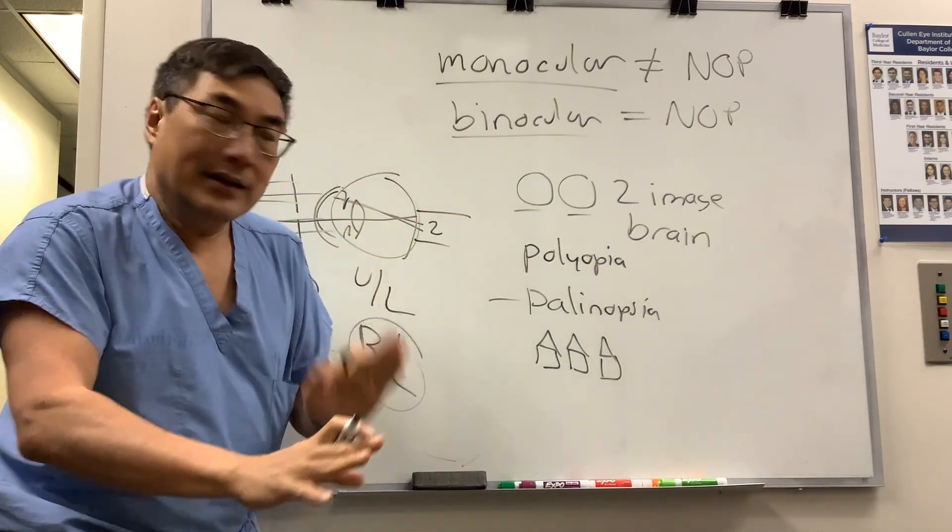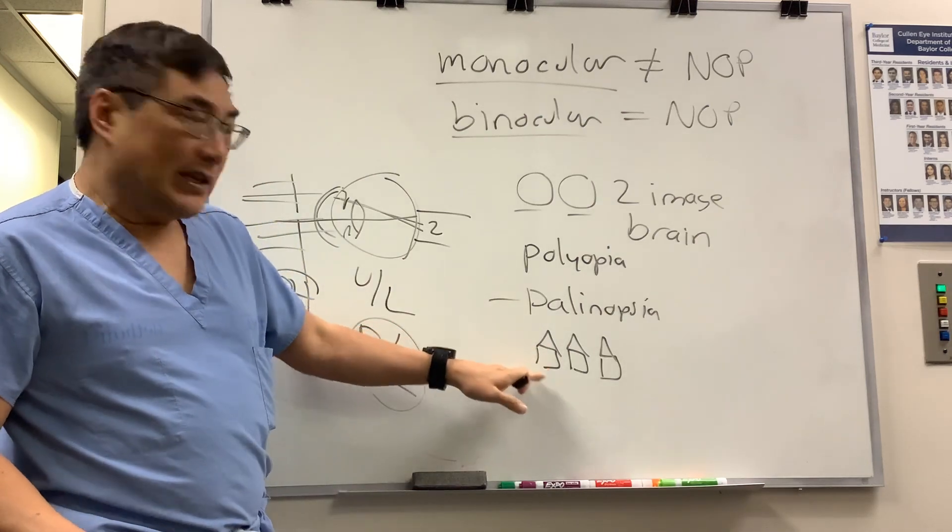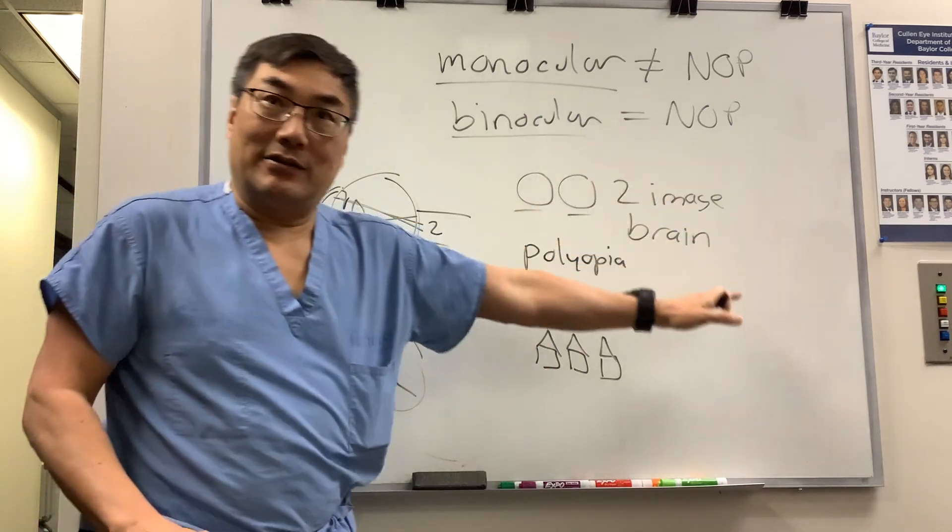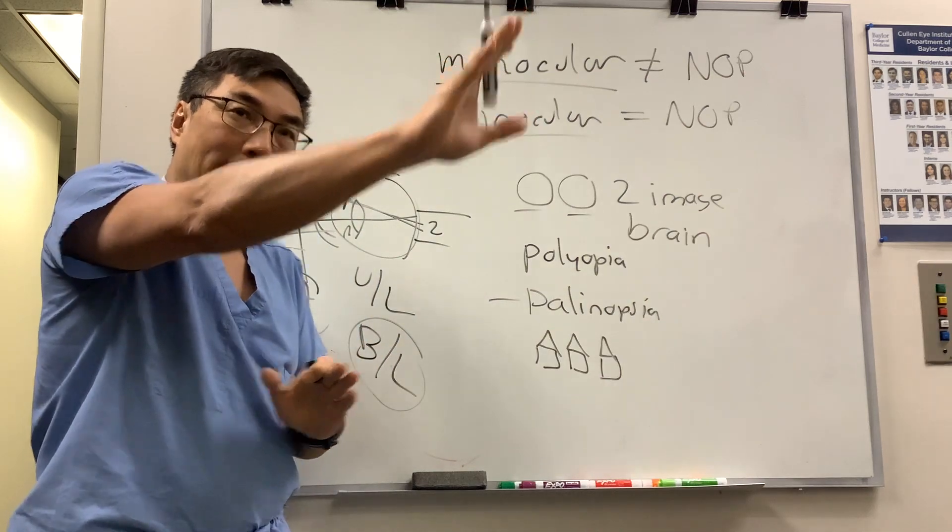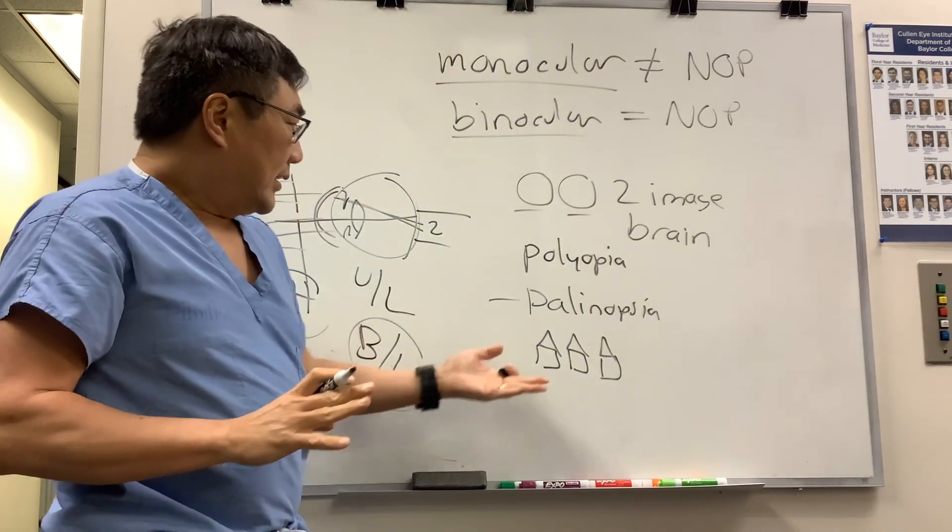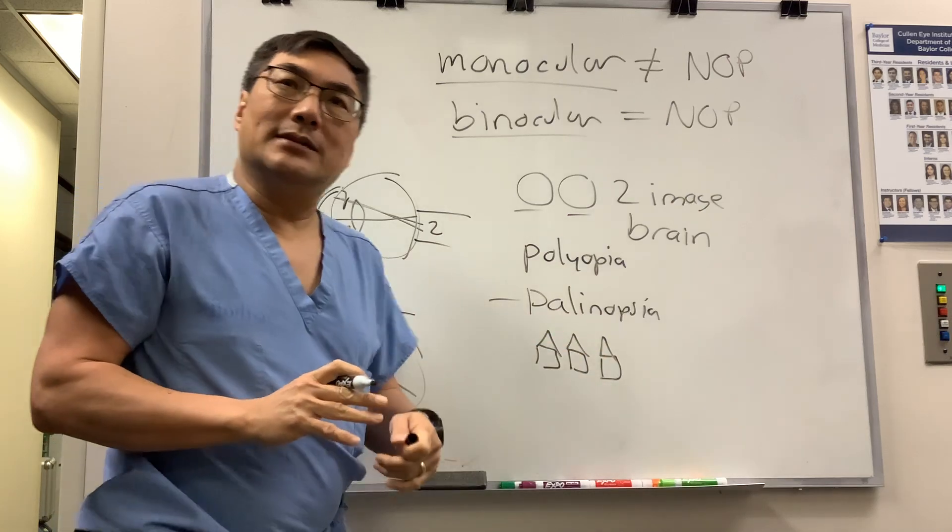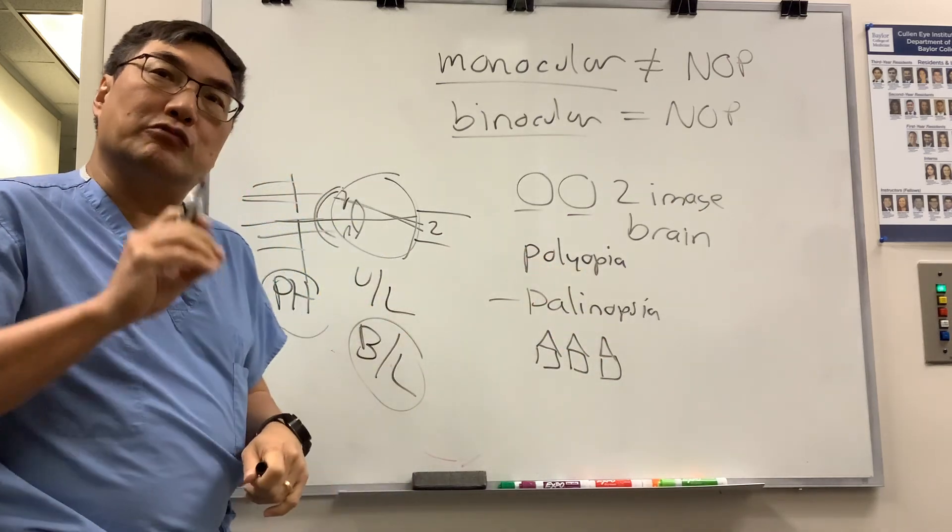If the image is repeating, the palynopsia can repeat at the same time or it can appear later. So you're looking at one thing, a window, and all of a sudden the door appears in there. These are palynopsia and polyopia on a cerebral basis.